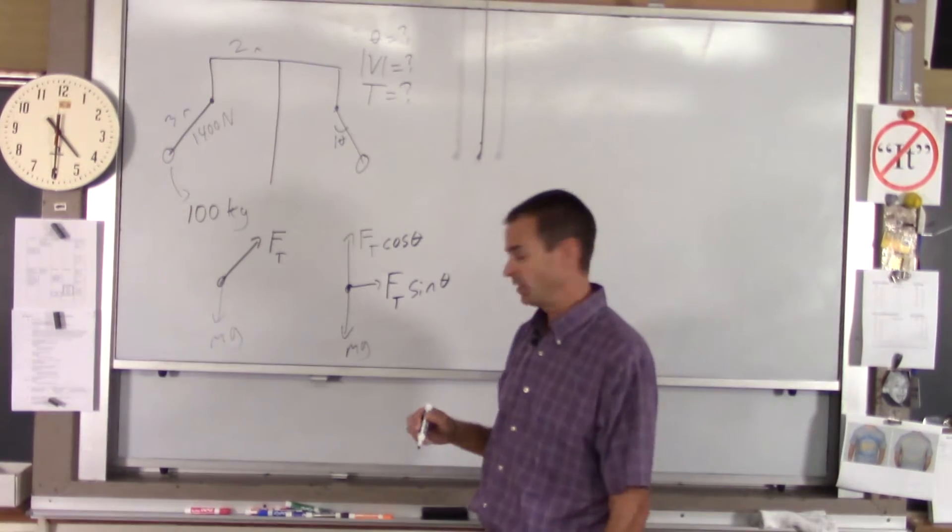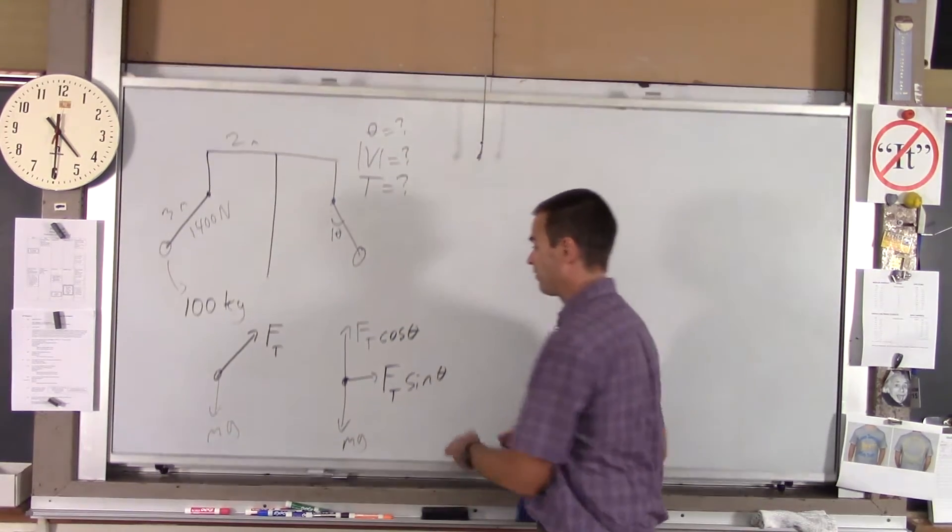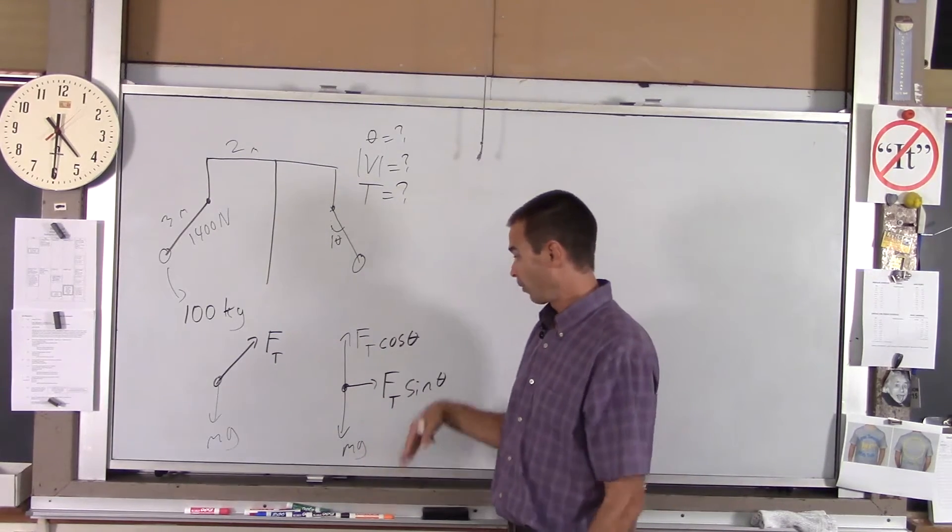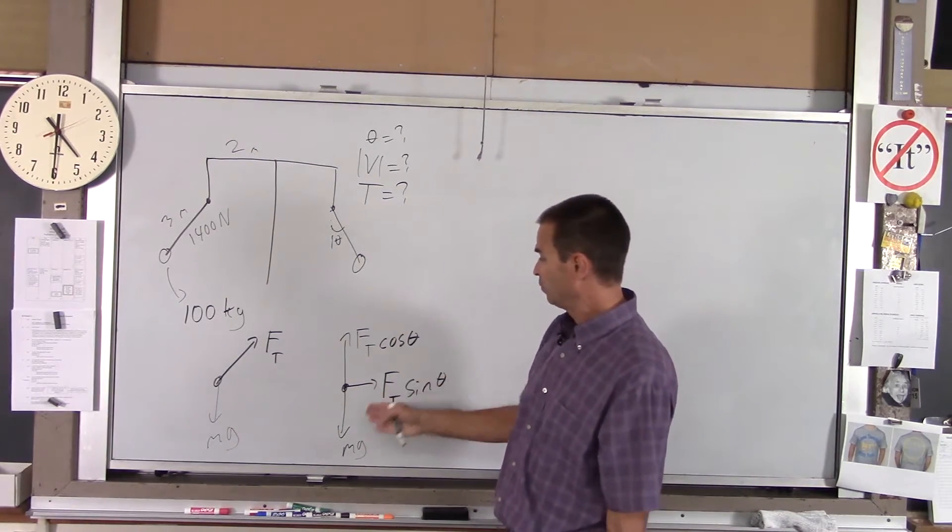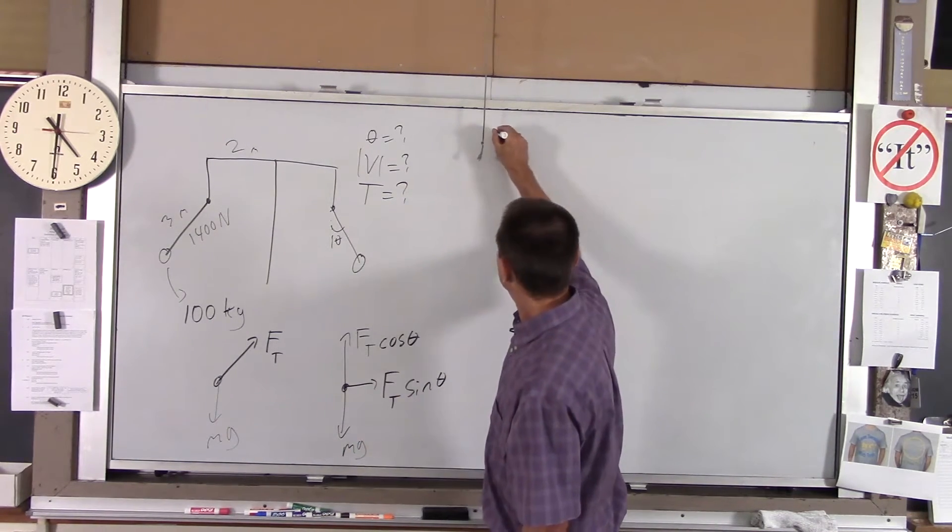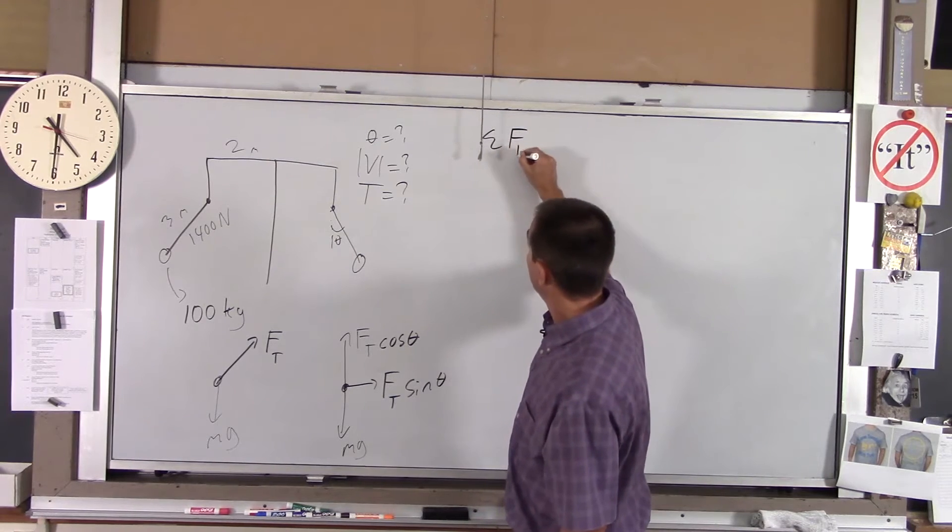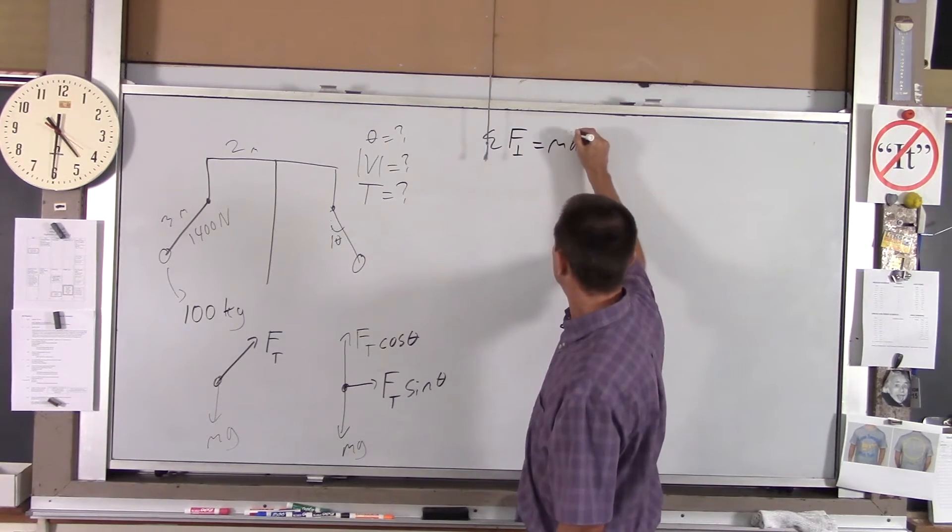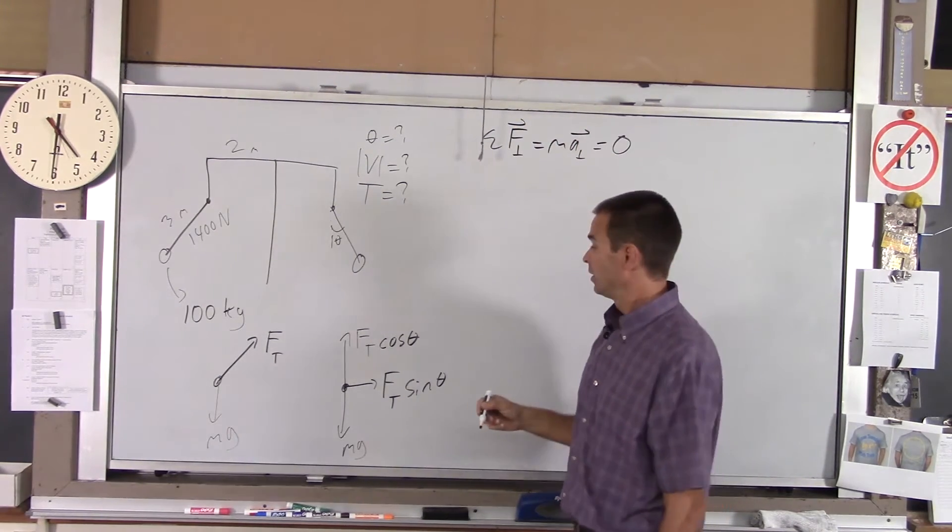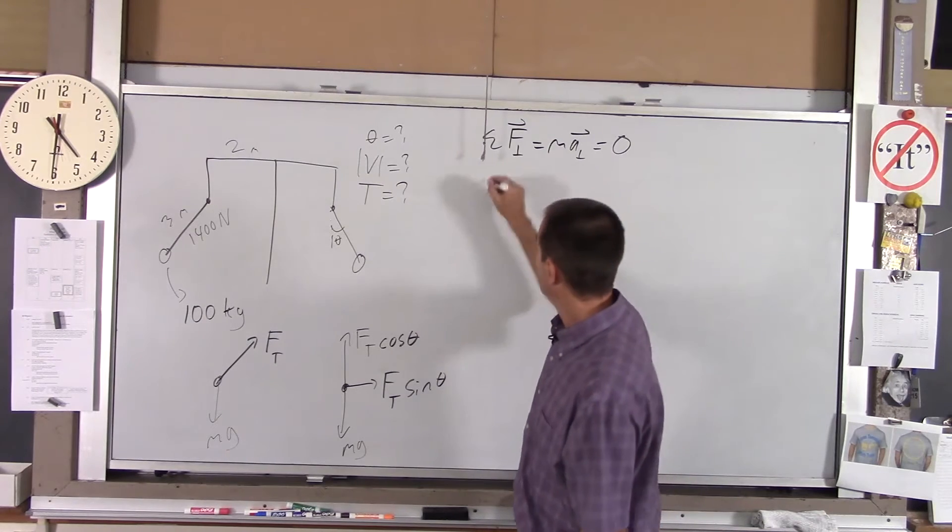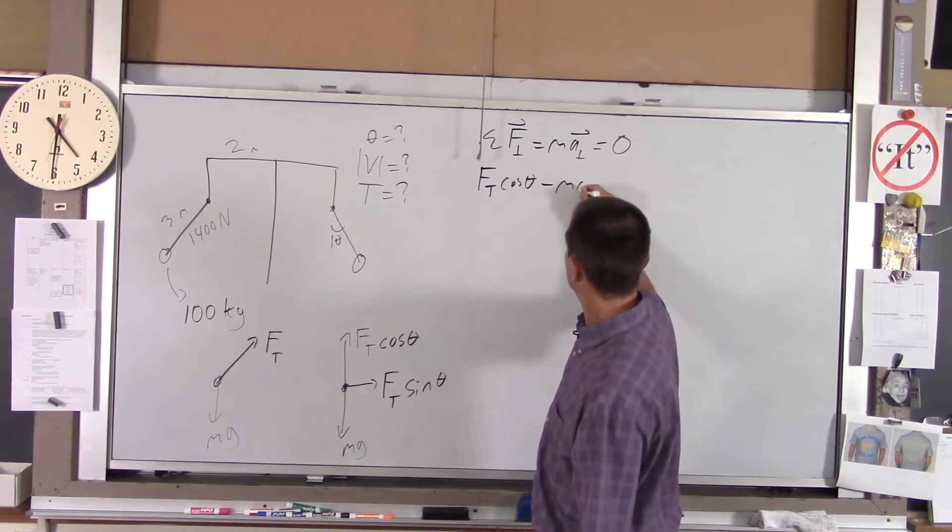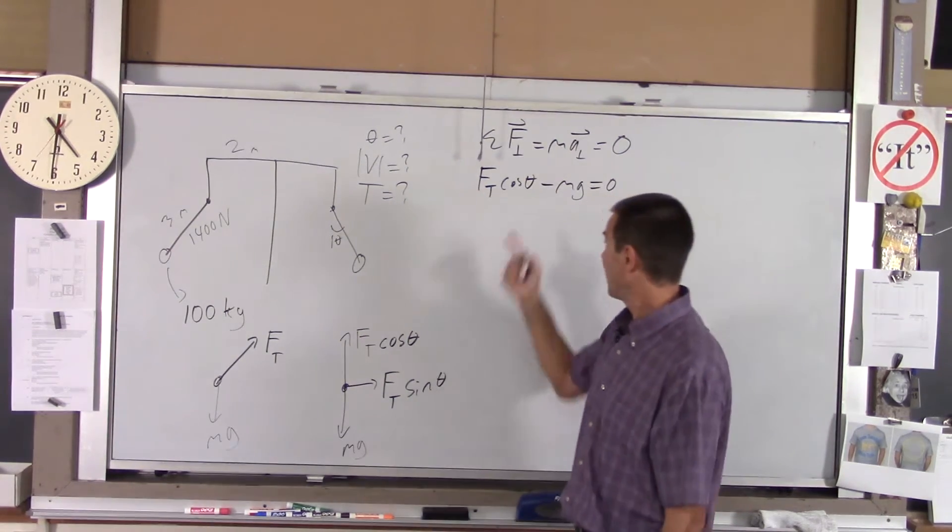So there's our component FBD. Now, I want to find what theta is. Well, if you look in the vertical direction, or the perpendicular to the radial direction, there's no acceleration up or down. He's not accelerating that way or that way. So if I do net force in the perpendicular direction equals Ma perpendicular, well, that equals zero. Let's say up is positive. If I do that, I've got Ft cosine of theta minus mg equals zero.